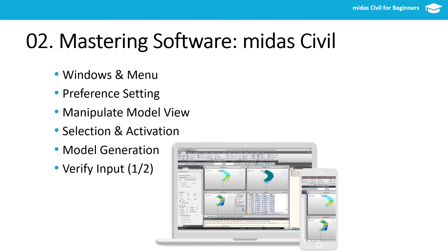The first lesson would introduce you to the windows and menu systems. Then we will talk about the units and other preference settings. The next lesson is on different modes of viewing — manipulating the model views — namely solid view, isometric view, etc. Selection and activation is dealt with in the next lessons. These operations would be extensively used, so it is recommended to get yourself fully acquainted with these operations.